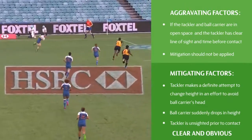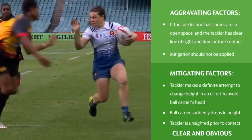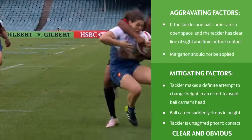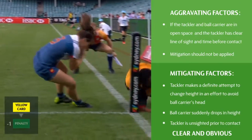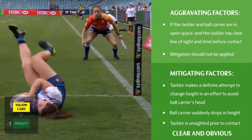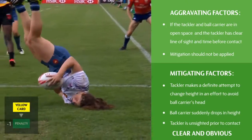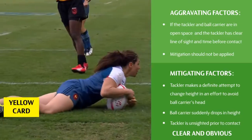Here, the players are in open space. The tackler has a clear line of sight and time before contact, and so aggravating factors exist. Therefore, no mitigation should be applied and the decision remains at a yellow card.